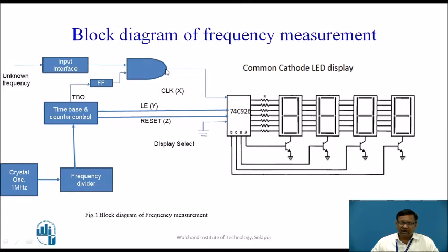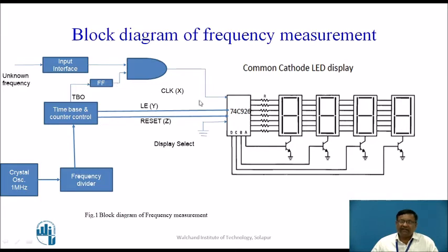The input frequency is given to the clock input of the 74C926 for exactly one second. That means we get the input frequency in hertz. The AND gate is used for passing the unknown frequency input signal for exactly one second, and whatever count we get at the output of the display will be the frequency in hertz. Frequency means cycles per second, so since the unknown frequency signal is fed to the clock input of 74C926 for exactly one second, whatever we get directly is the frequency in hertz.